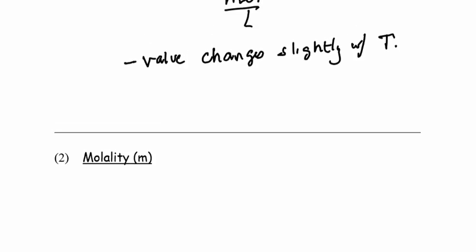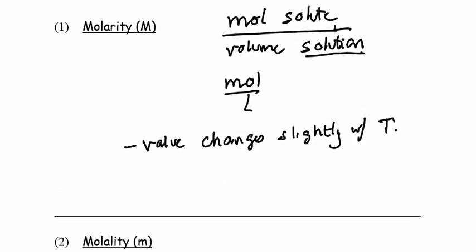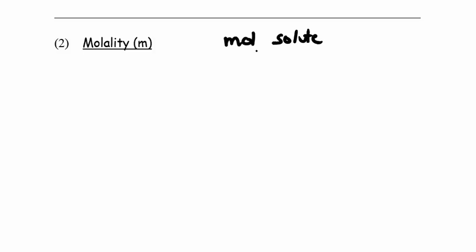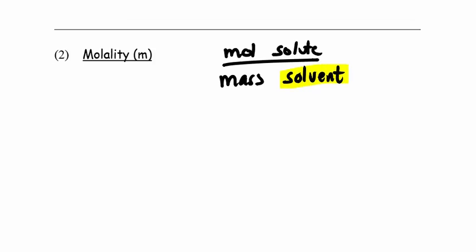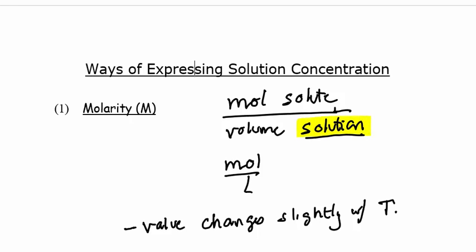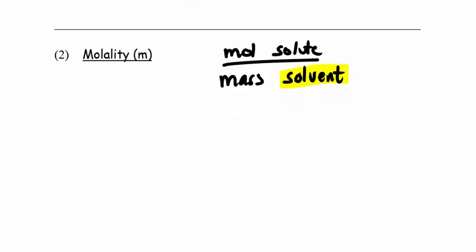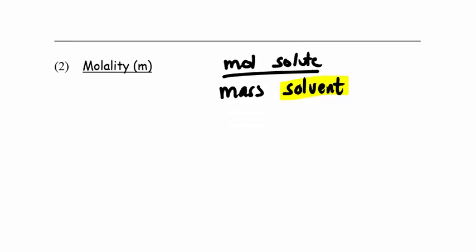The next unit is called molality, which sounds a lot like molarity — it's only different by one letter — and that's represented by a lowercase m. Molality refers to moles of solute per mass of solvent. Notice that we're talking about solvent here, whereas for molarity we're talking about solution. So the denominator for molality is the solvent, not the entire solution, and it's the mass, not the volume. The most common units are moles per kilogram of solvent.